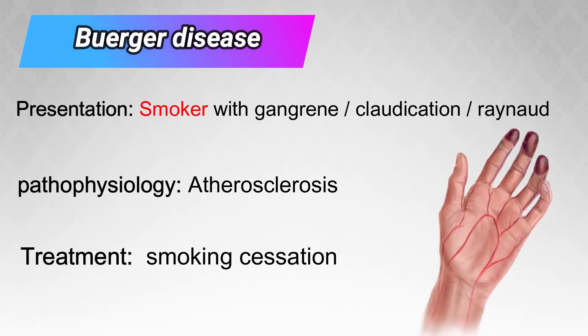Thromboangiitis Obliterans, also known as Buerger's disease, is essentially atherosclerosis caused by smoking, resulting in gangrene, claudication, and Raynaud's phenomenon. The treatment is obviously smoking cessation.